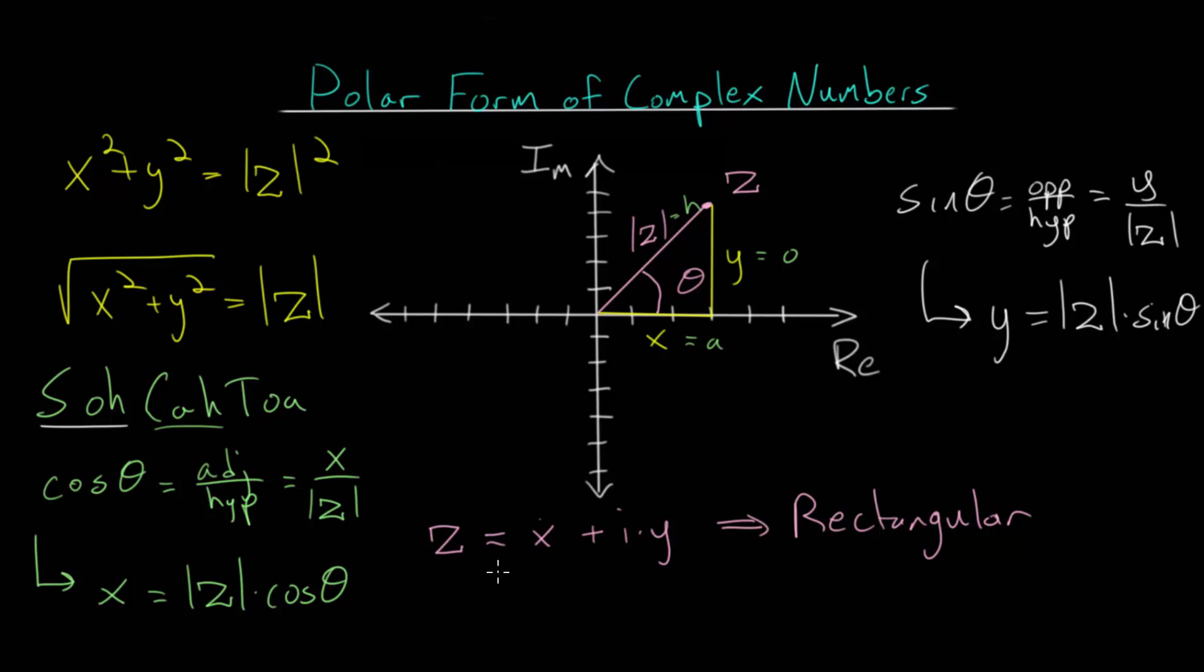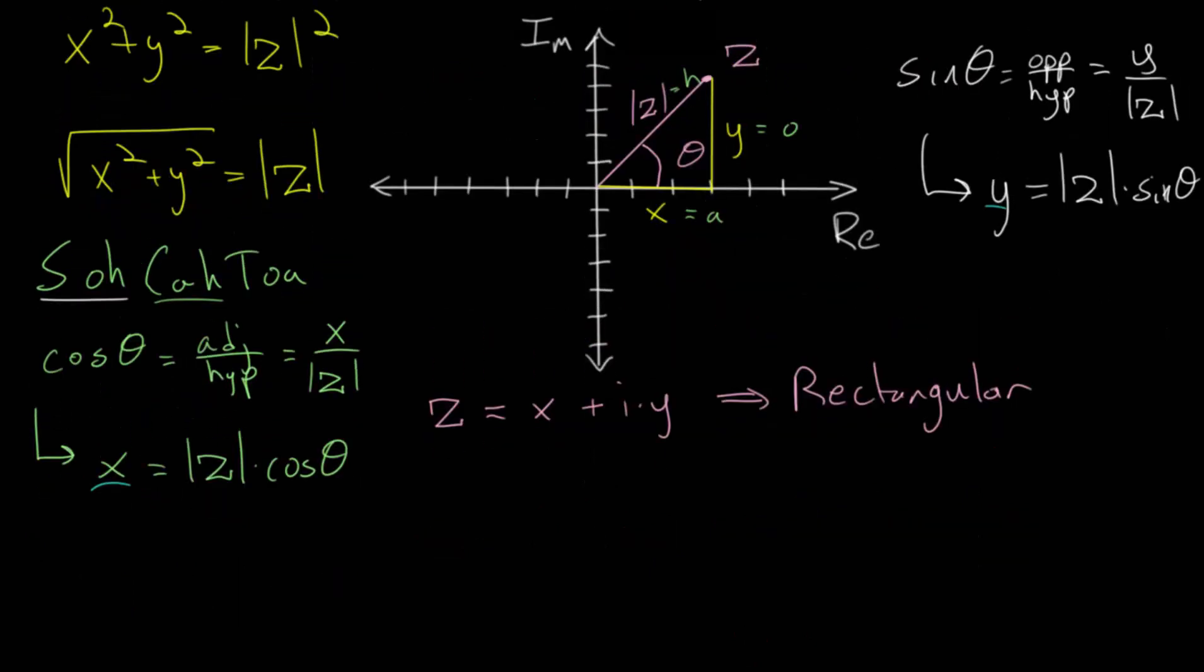And let's make a little bit of room and substitute what we found for y and x into this original equation for the complex number z. And by doing that, we now have that z is equal to x, which is the magnitude of z multiplied by the cosine of theta, plus i times y, which is the magnitude of z multiplied by the sine of theta.